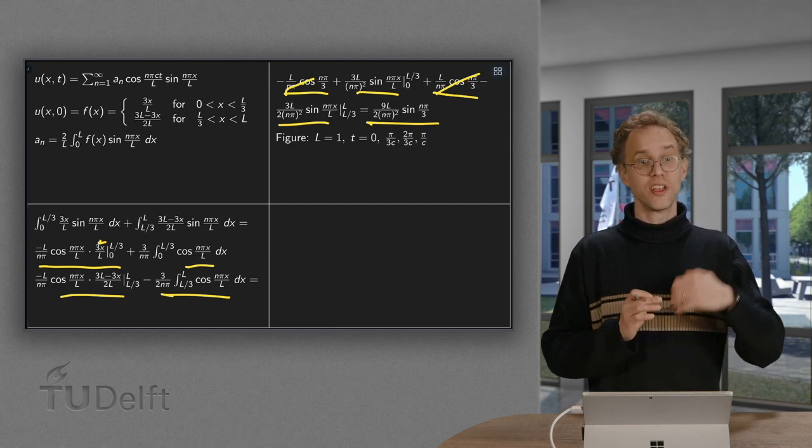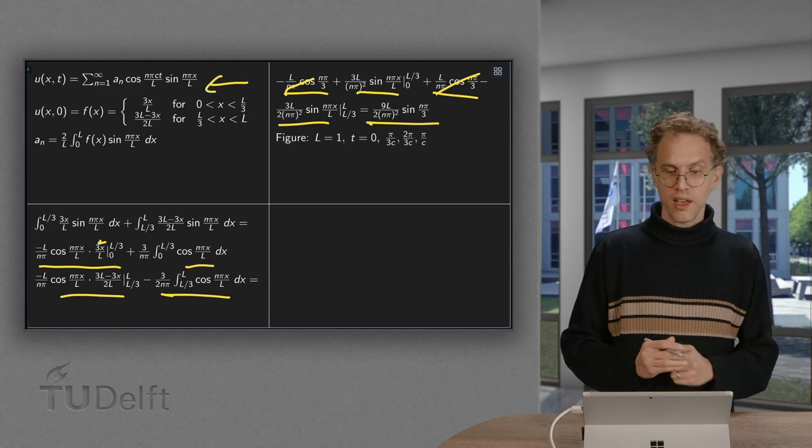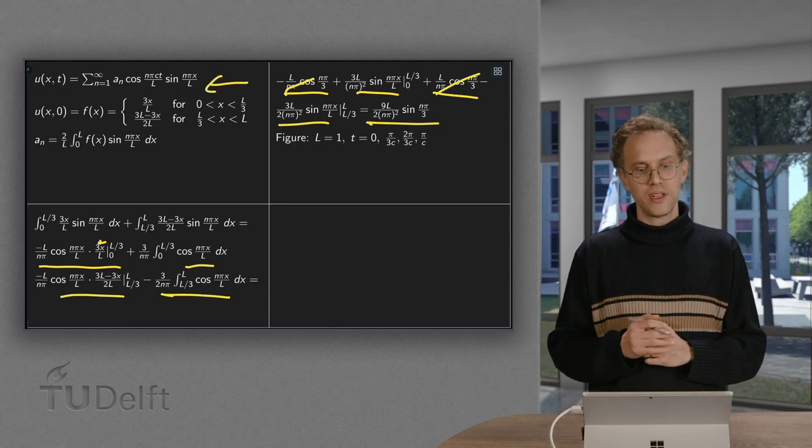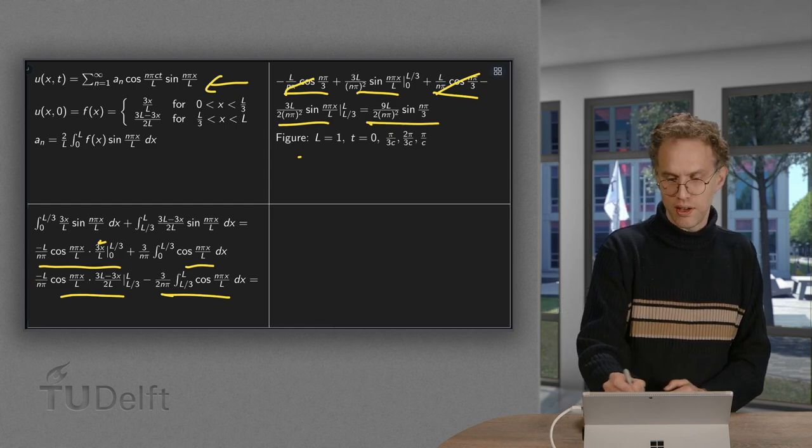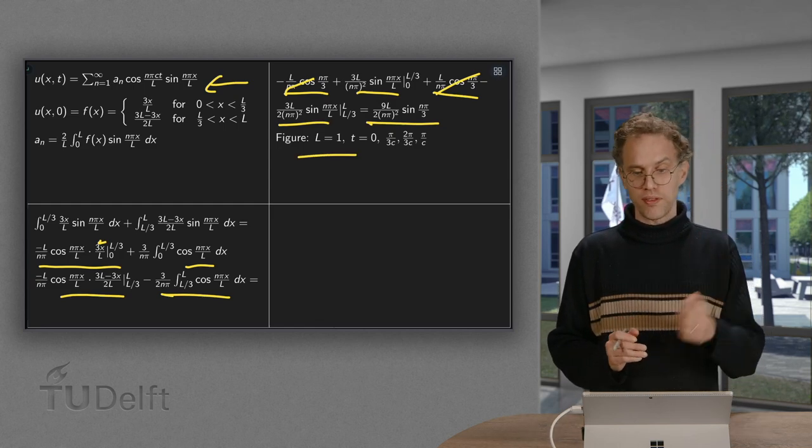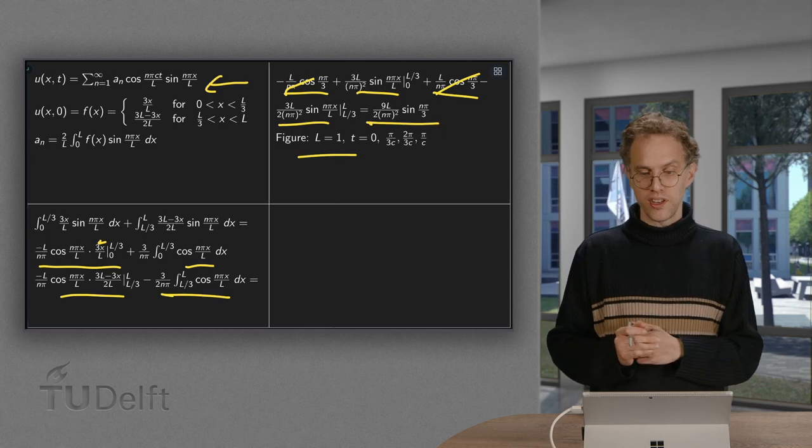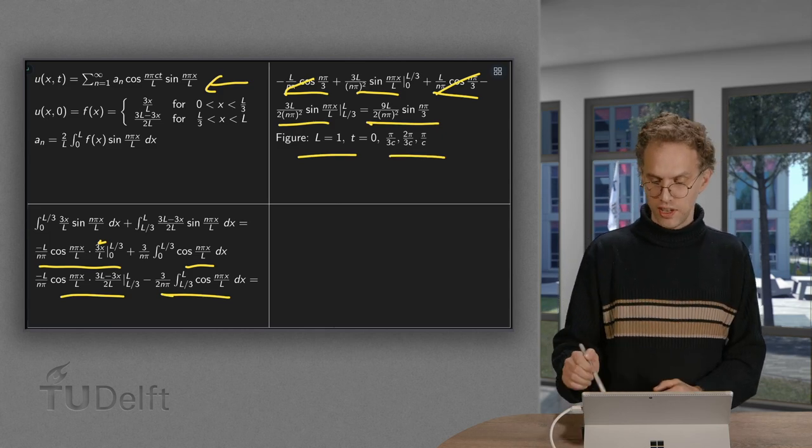So then we have everything. We have our an and we have our u. And now of course we like to plot something. So if you want to plot we have to choose some L. So I choose for the figure L equals 1. And I took some different times, t equals 0, pi over 3c, 2 pi over 3c, and pi over c. And then we get the following plots.